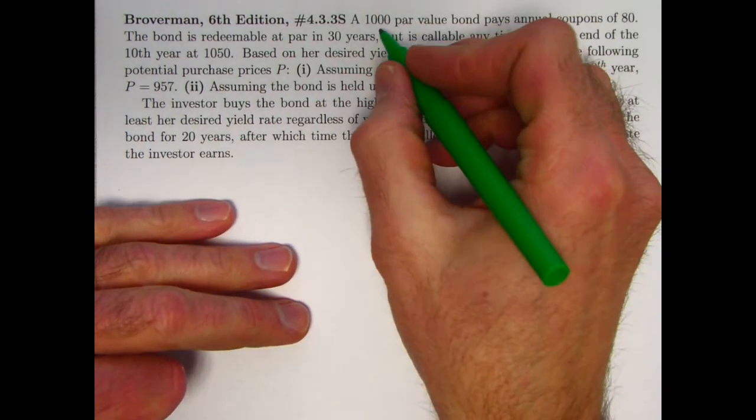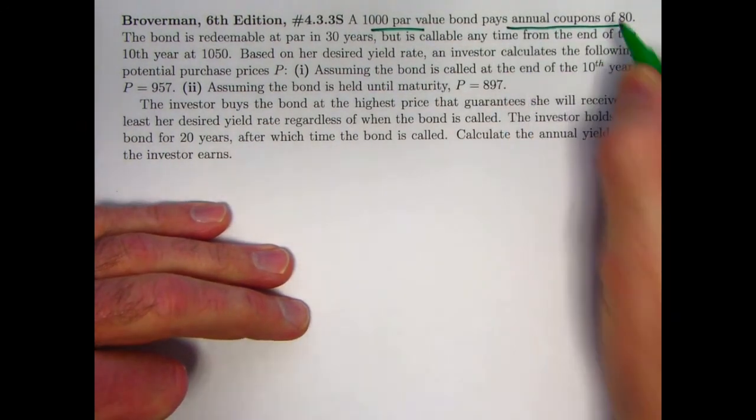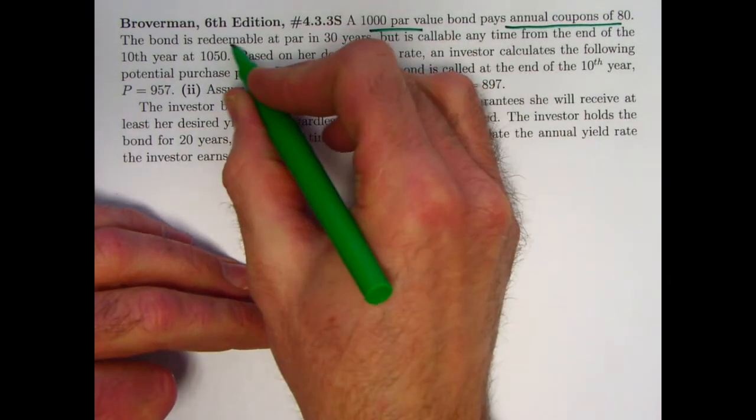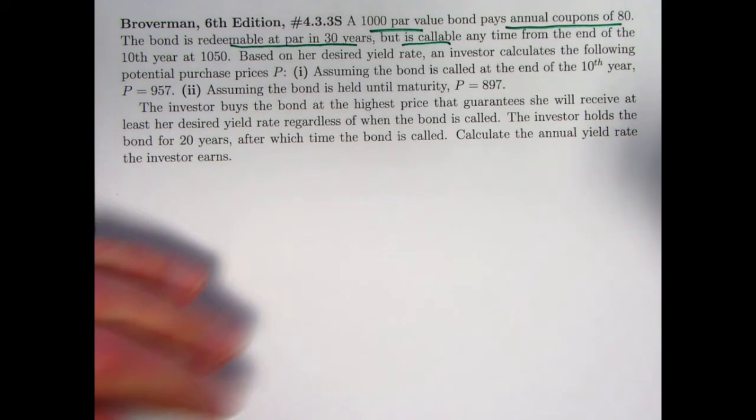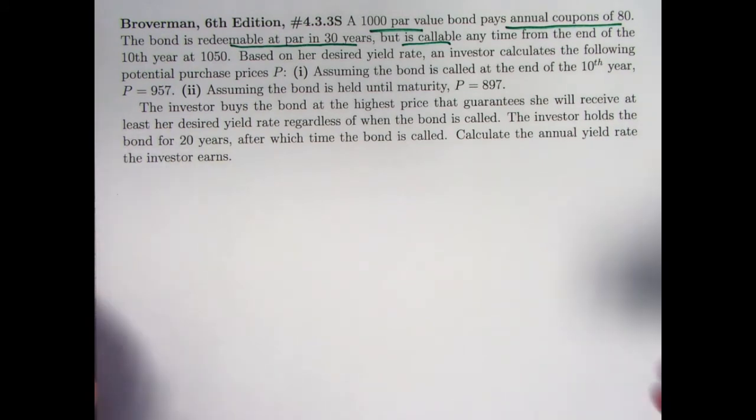So we've got a 1,000 par value bond, pays annual coupons of $80, redeemable at par in 30 years, but callable, redeemable according to the desires of the borrower,